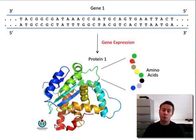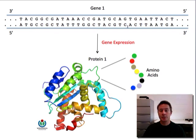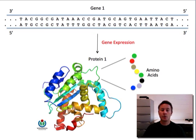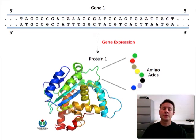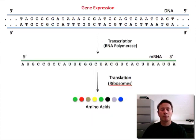How does this relate to gene expression? Well, the sequence of amino acids present within the protein is determined by the sequence of nucleotides — the A's, T's, G's, and C's — within the gene. So when we talk about gene expression, ultimately what's happening is that this code, the sequence of A's, T's, G's, and C's, is being interpreted to instruct the creation of a polypeptide chain with a specific sequence of amino acids. This decoding or gene expression process happens in two key steps referred to as transcription and translation.